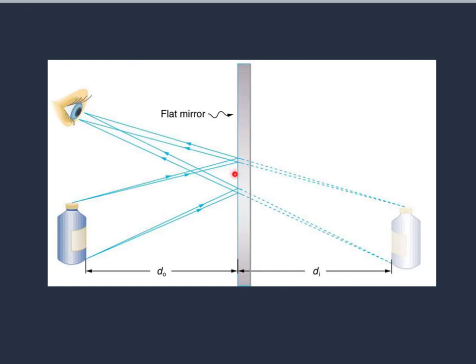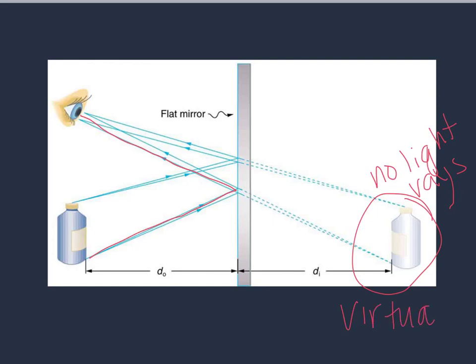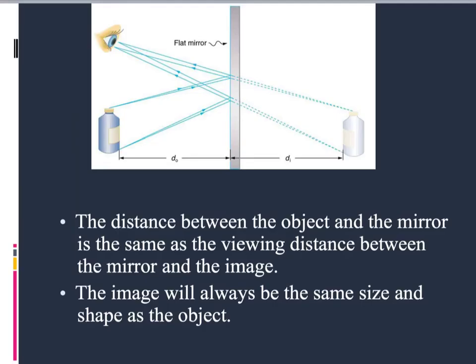But here's a drawing of a flat mirror. And you've got a person looking in the mirror at this bottle. And they see the bottle over here. So the reason this is virtual is because no light actually travels back here. There are no light rays back here. The light rays are actually here and then in your eyes. Because there's no light rays, this is why it's a virtual image. It appears to be where it isn't.